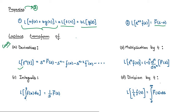Next, coming to different cases of Laplace transforms. In the first case, to find the Laplace transform of derivatives, it is given by s to the power of n times F bar of s, minus s to the power of n minus 1 times f(0), minus s to the power of n minus 2 times f'(0), and so on. Next, to find the Laplace transform of a function multiplied by t to the power of n, it is given by minus 1 to the power of n multiplied by the nth derivative with respect to s of F bar of s.